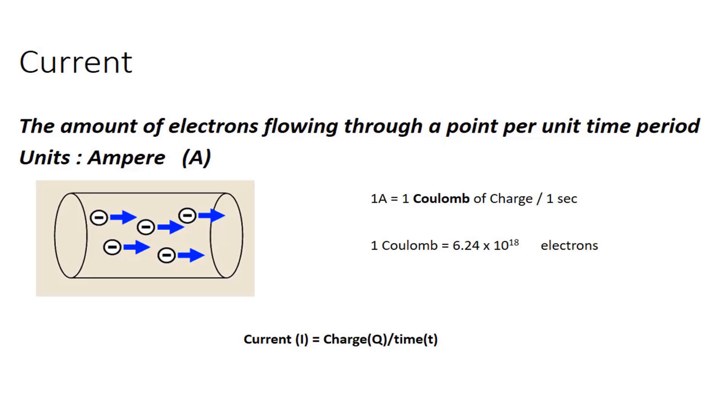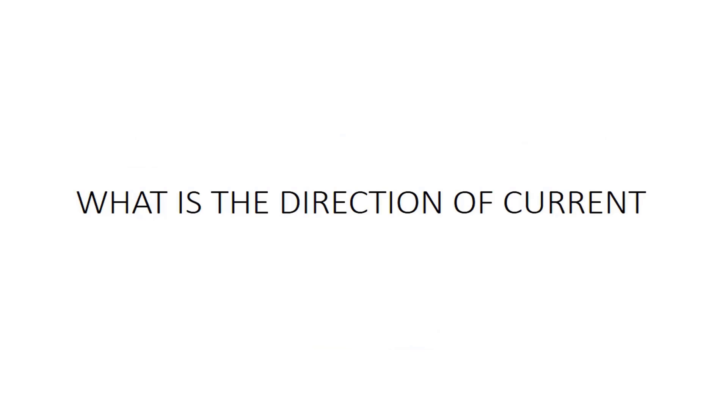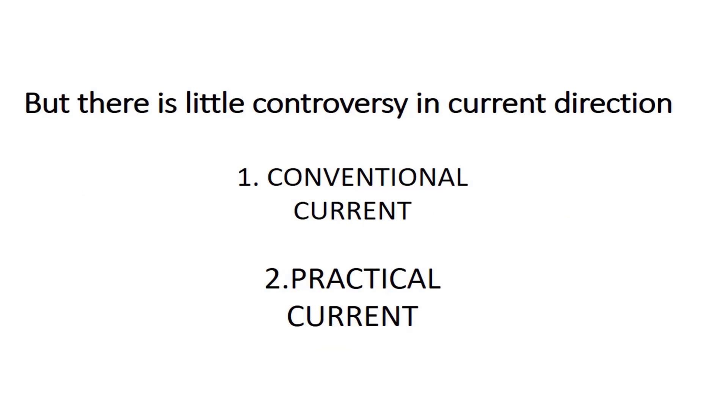Now it's time to determine the direction of current. What is the direction of current? There is a little controversy in current direction. There are two types of current directions: one is conventional current and the second is the practical current direction.